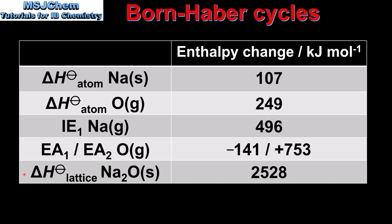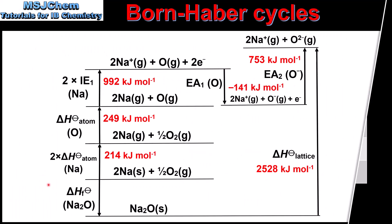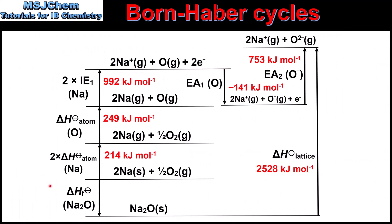Next we'll put these values into the Born-Haber cycle. Here we have the completed Born-Haber cycle together with the enthalpy change values. According to Hess's law, the enthalpy change of formation of sodium oxide is equal to 2 times the enthalpy change of atomization of sodium, plus the enthalpy of atomization of oxygen, plus 2 times the first ionization energy of sodium, plus the first and second electron affinities of oxygen, minus the lattice enthalpy of sodium oxide.